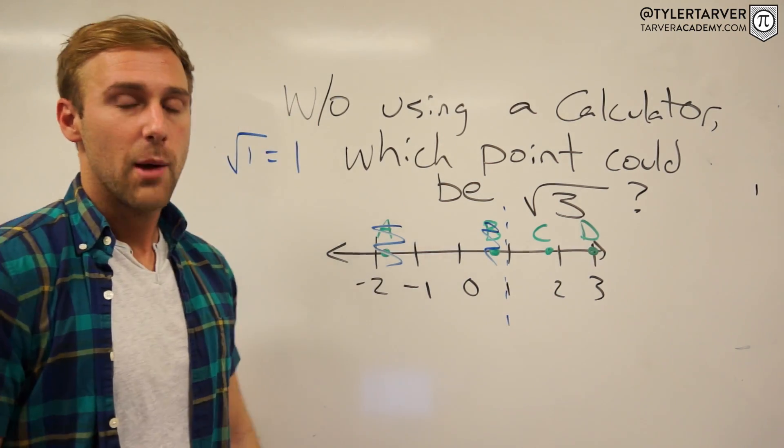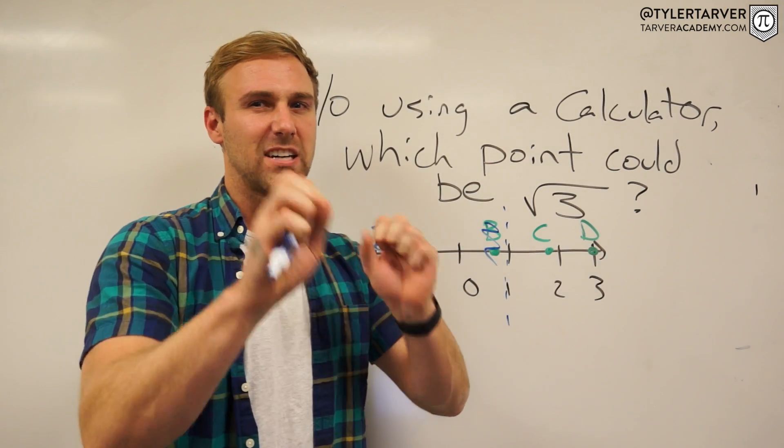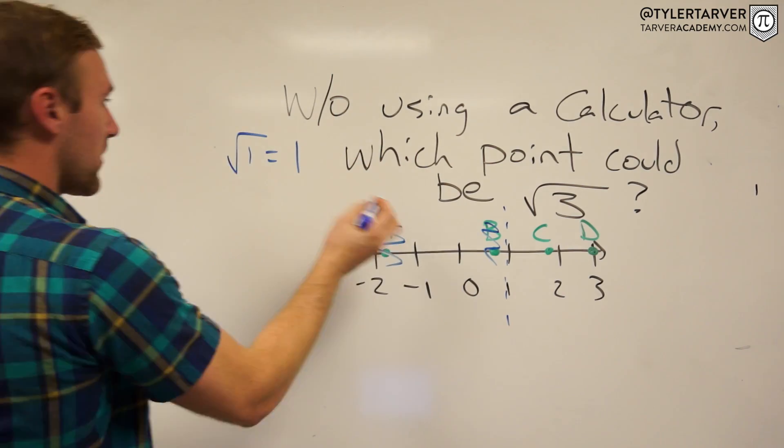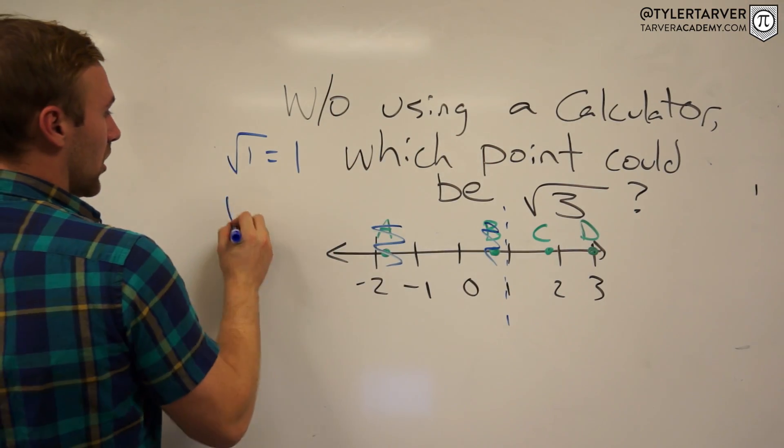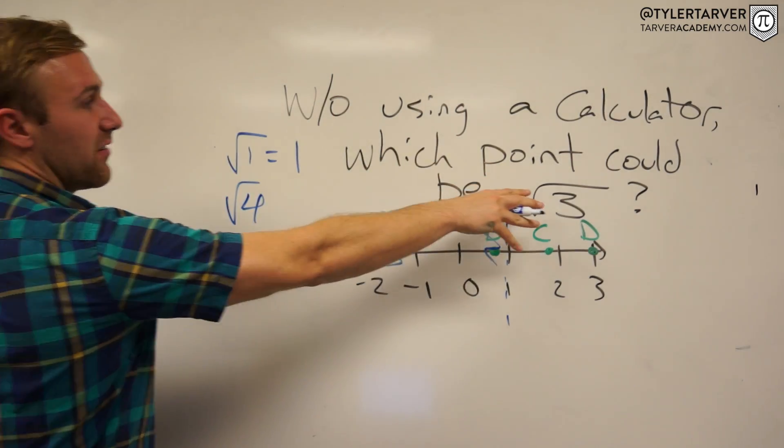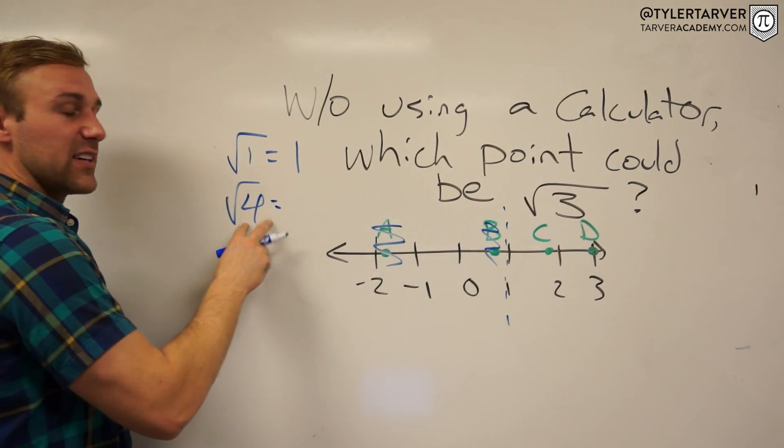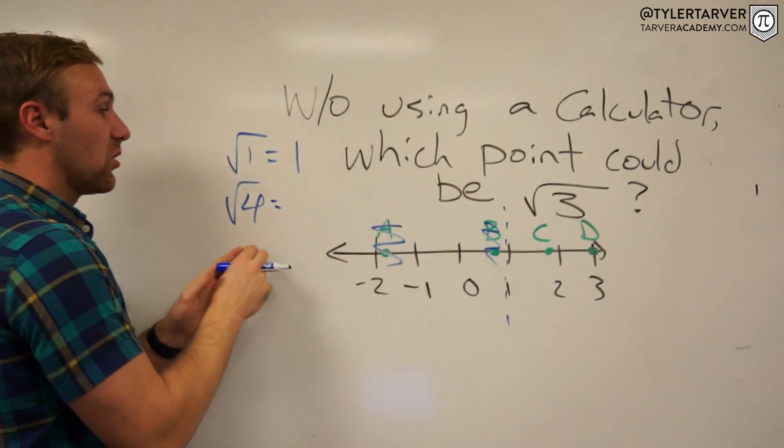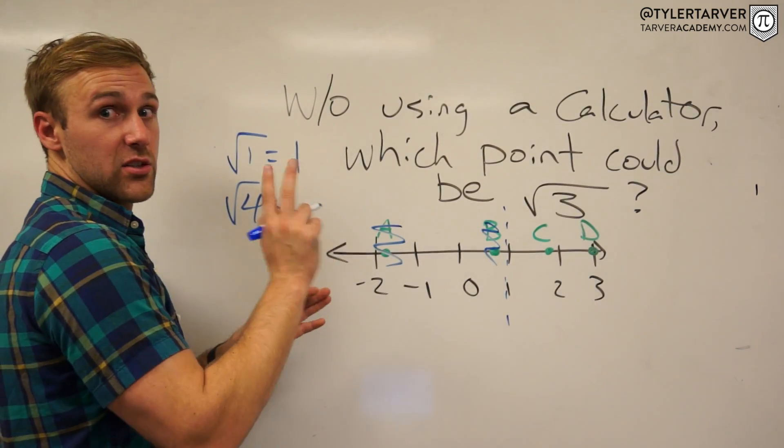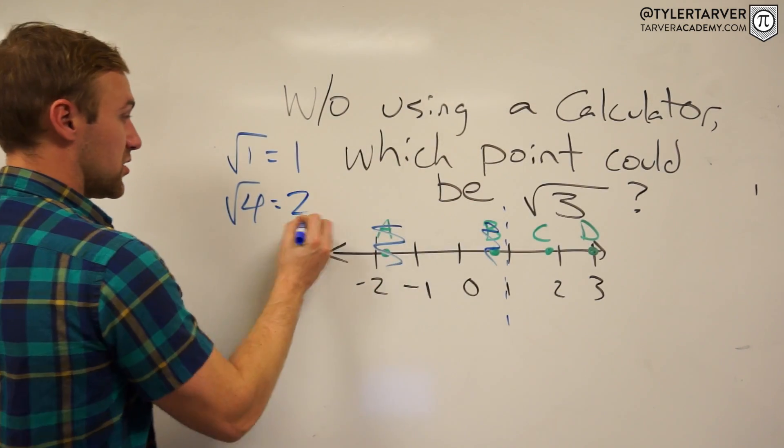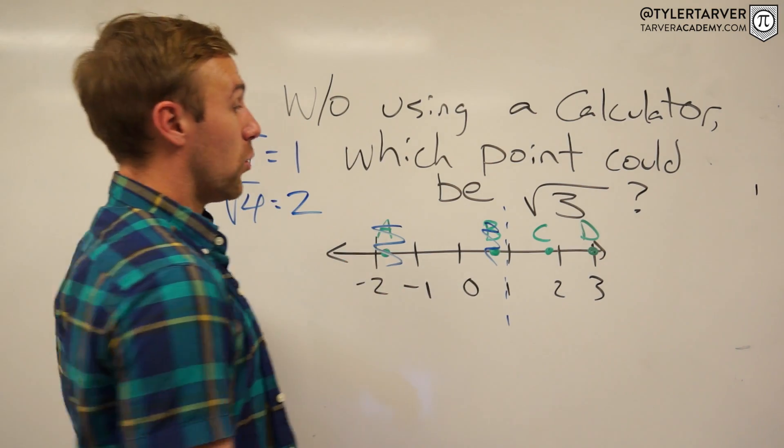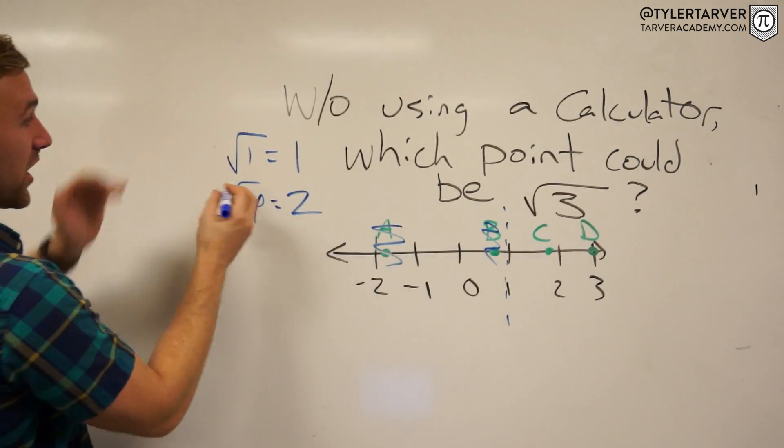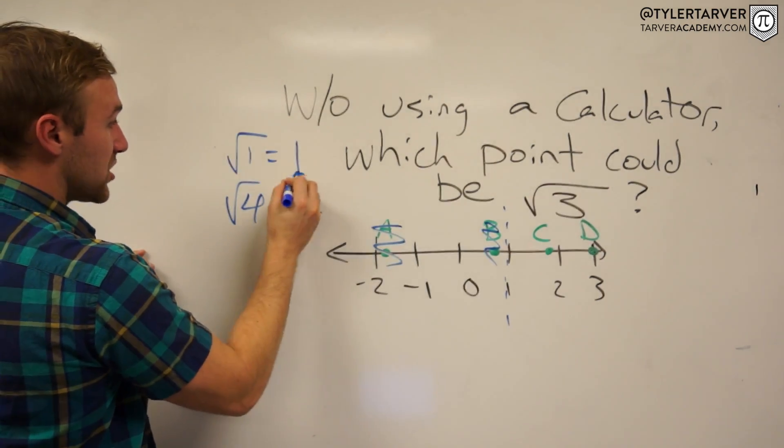3 exactly. Now before I even go, let's look at one more thing. We got √4 - I picked √4 because it's going to be a nice, sweet, simple, solid number. √4 is 2 because what times itself equals 4? 2. So we know that our number is going to be between 1 and 2.